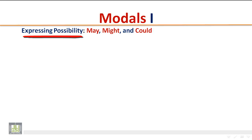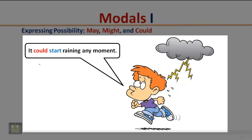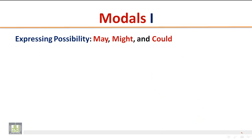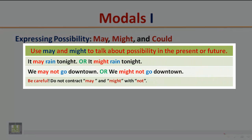Expressing possibility: May, Might, and Could. Listen to the following sentence and pay attention to the modal auxiliary: 'It could start raining any moment.' Use may and might to talk about possibility in the present or future. It may rain tonight, or it might rain tonight. We may not go downtown, or we might not go downtown. May, might, may not, and might not are used to express possibility in the present or future.